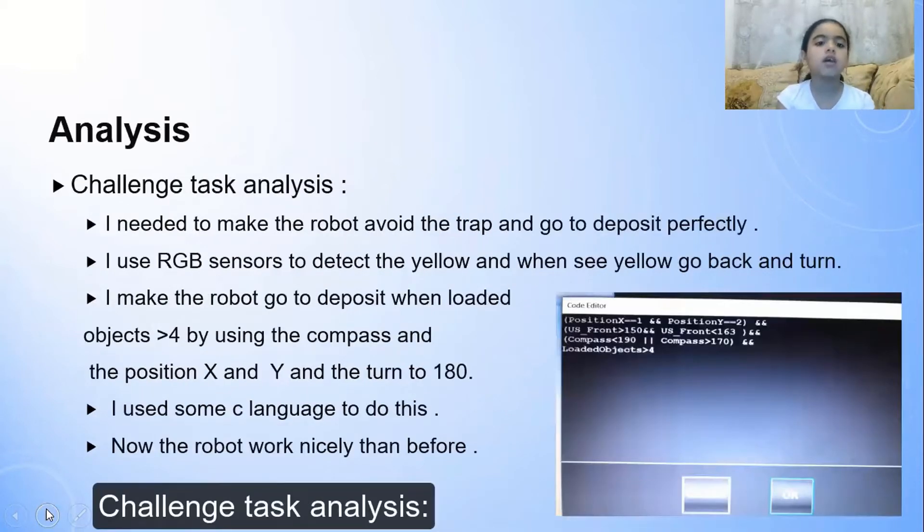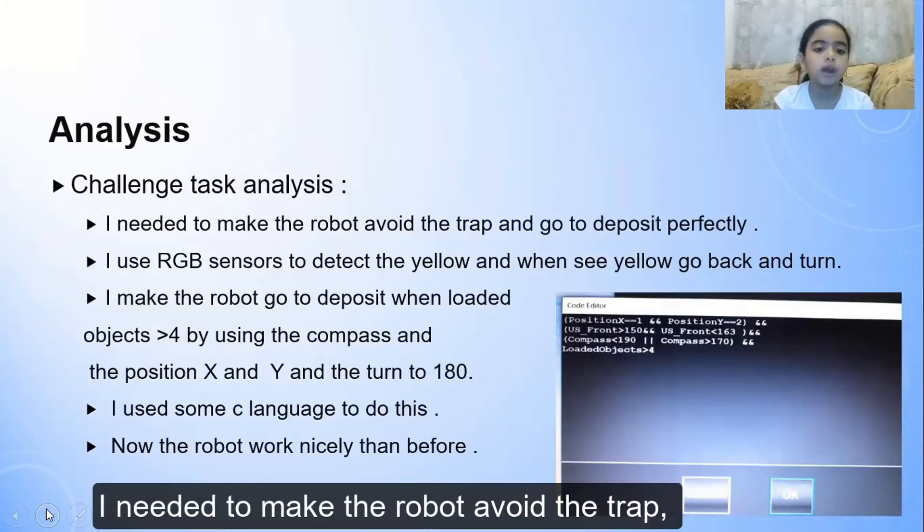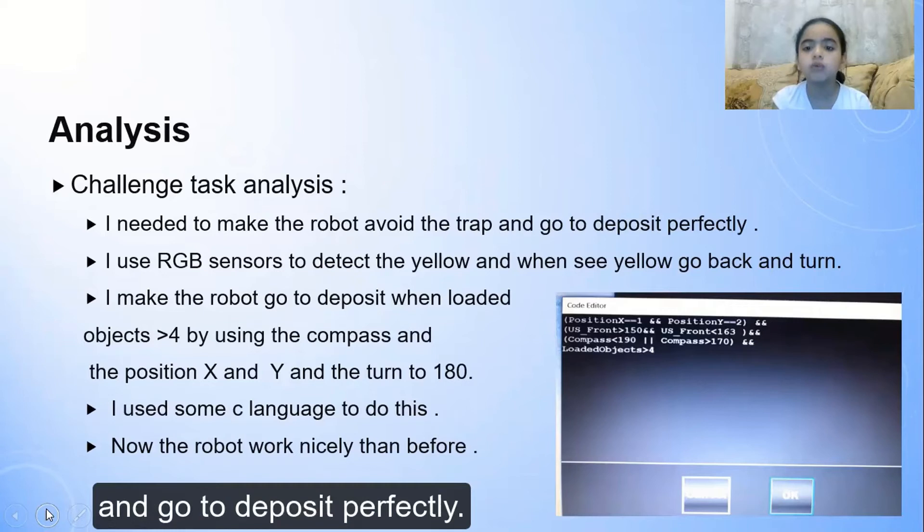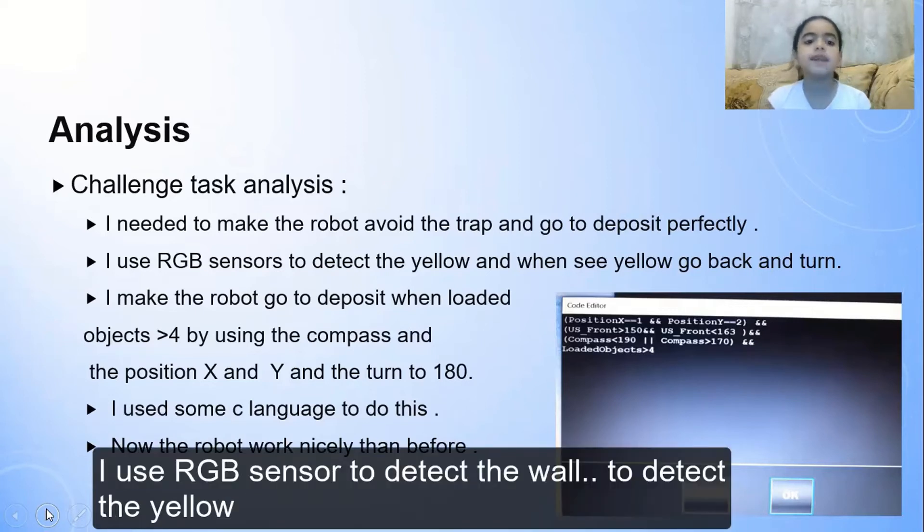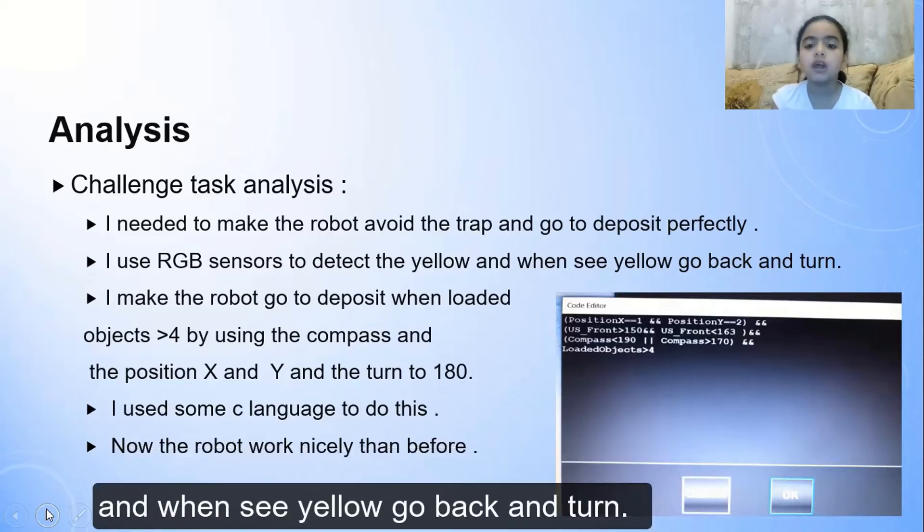Challenge task analysis: I needed to make the robot avoid the trap and go to deposit perfectly. I used RGB sensors to detect the yellow. And when see yellow, go back and turn.